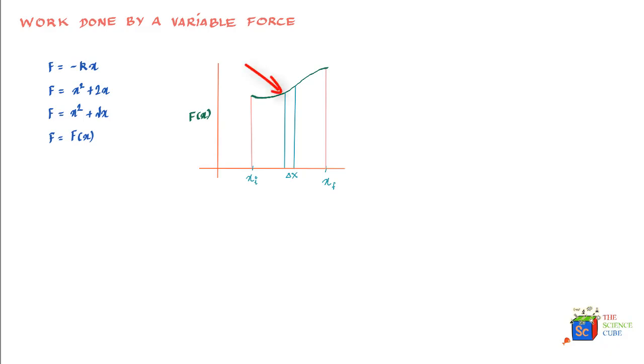some force value in between. Let us say this force is Fj. Then we can say that the work done by this force Fj to complete this small journey Δx is ΔW = Fj × Δx. In another way, you can say that